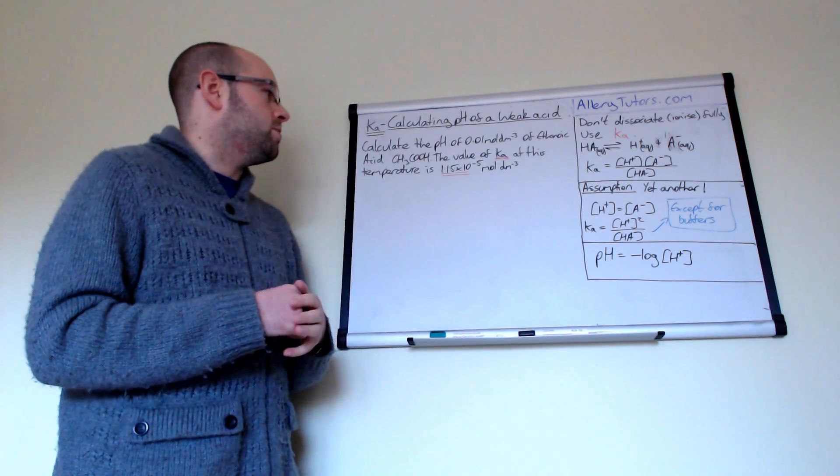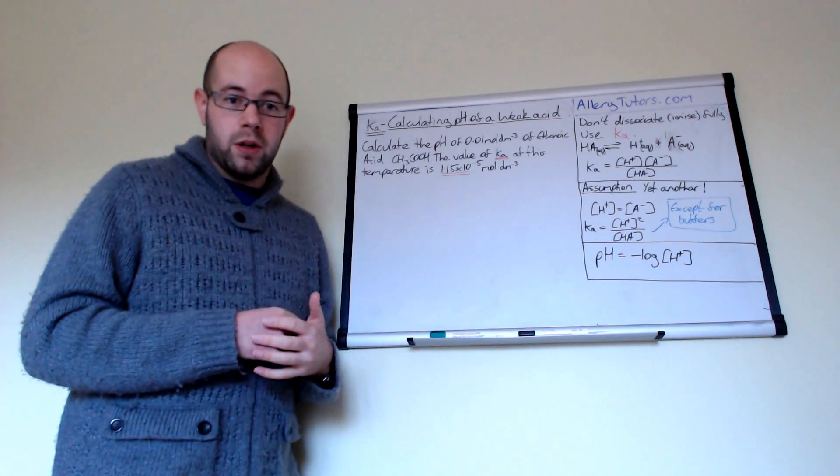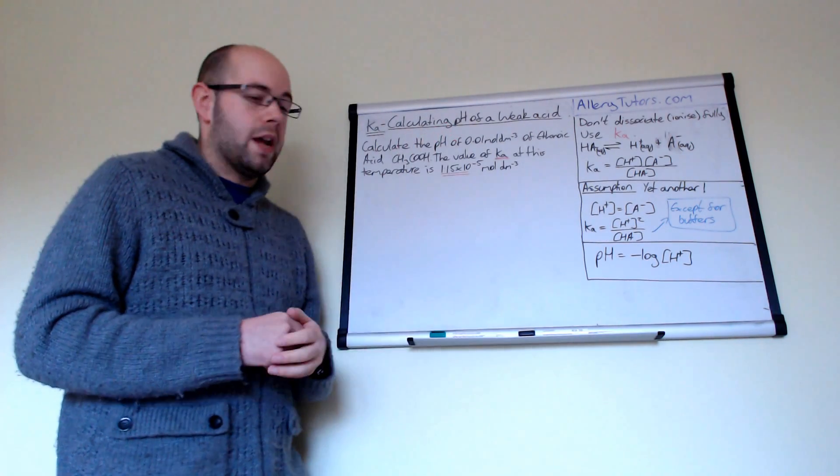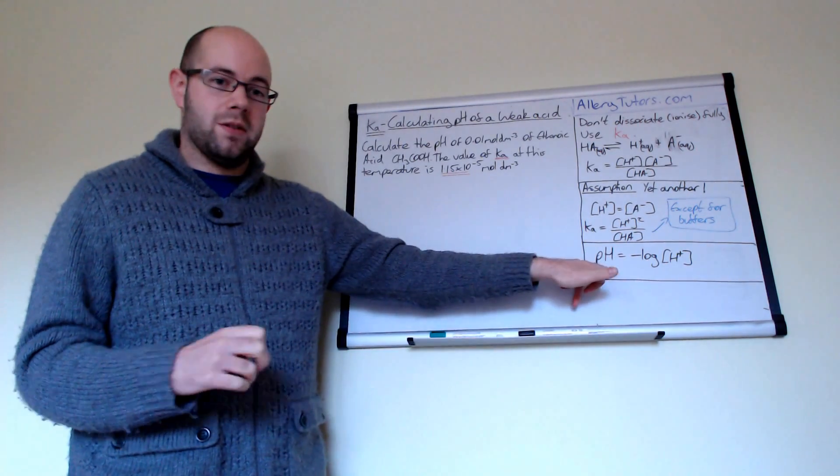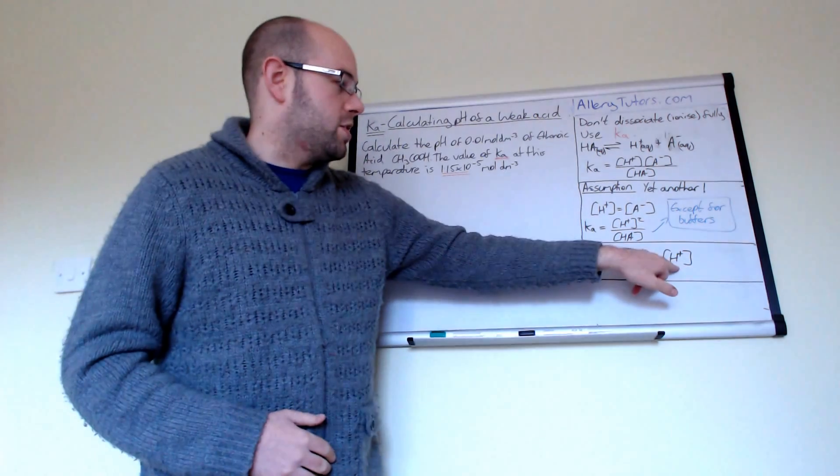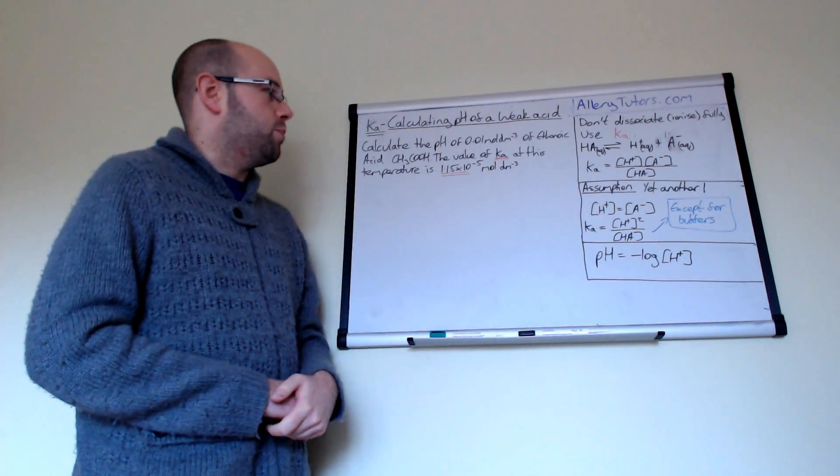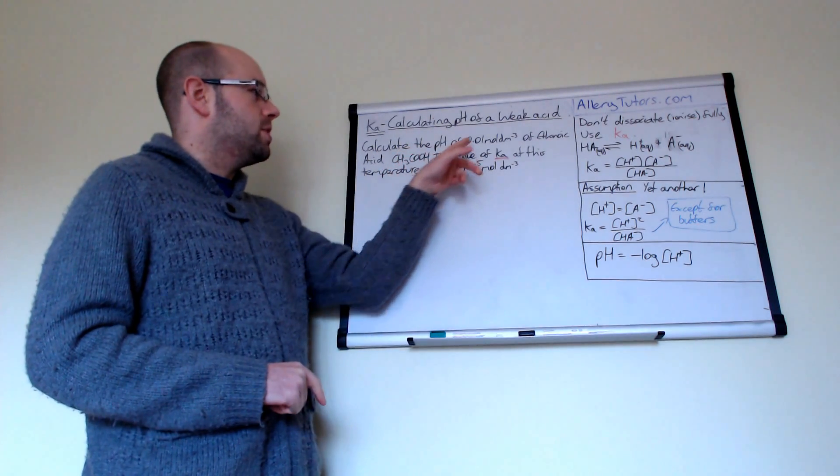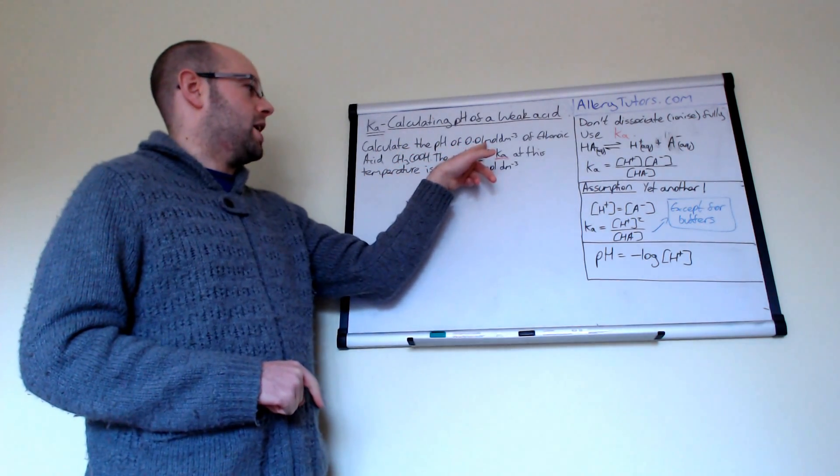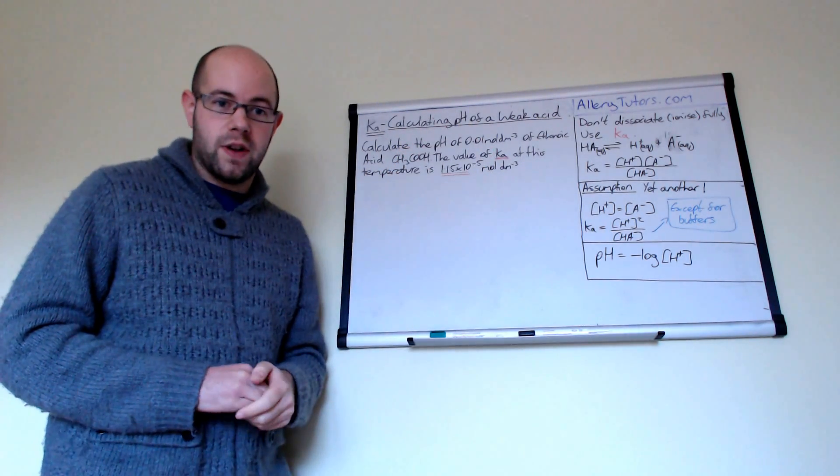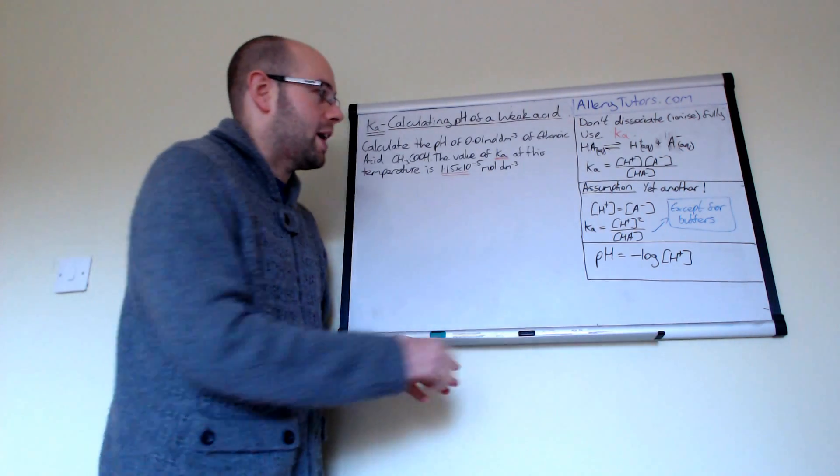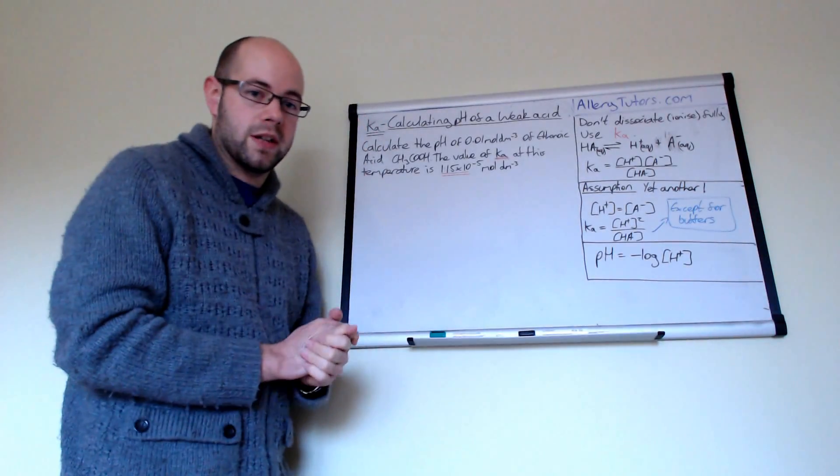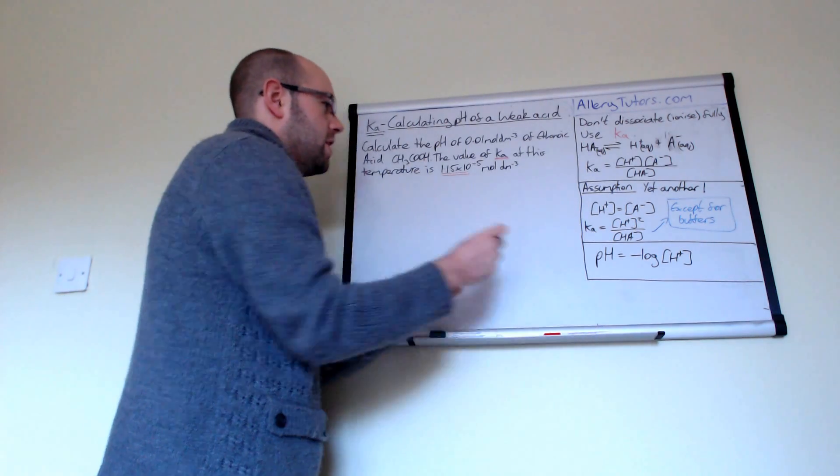So the first thing we need to do is we need to establish what we're going to work out. And we're trying to work out pH. So if we think of an equation with pH in, we think of this equation. And from that, we need to work out H plus. Now, we can't assume that the concentration of ethanoic acid equals the concentration of H plus. So this is where the Ka expression comes in first. So we have to use the Ka expression to work this out. So we're going to write this expression down now.